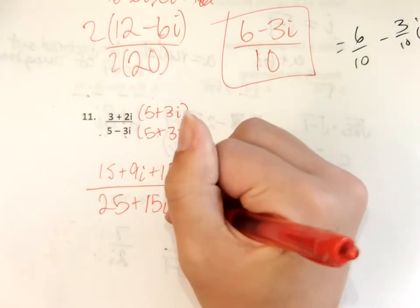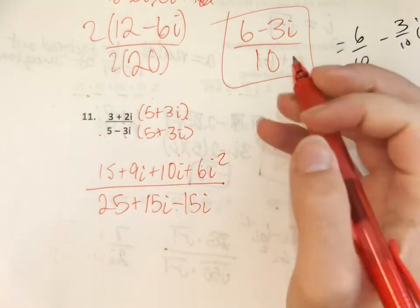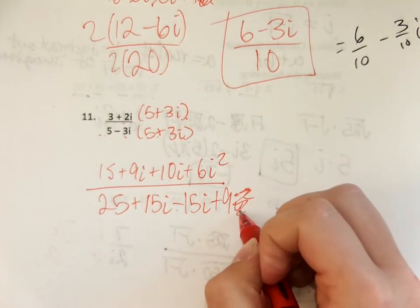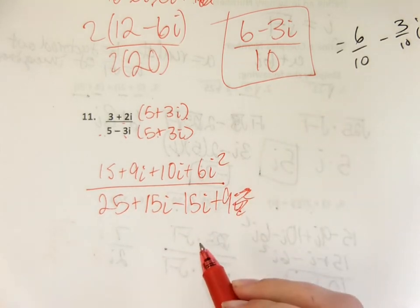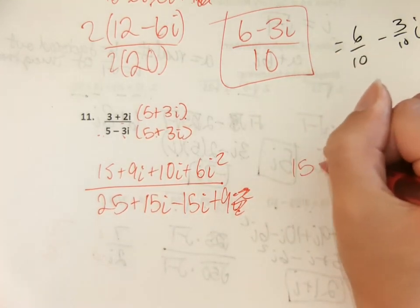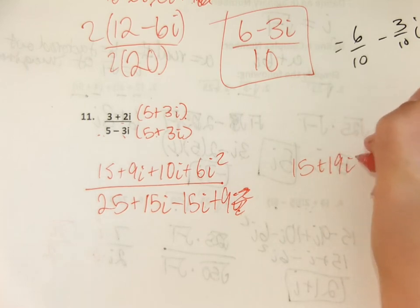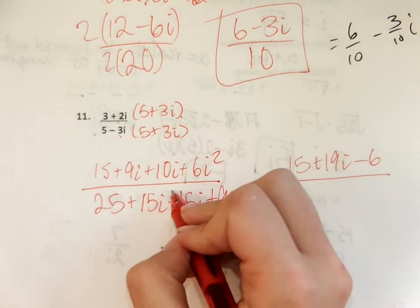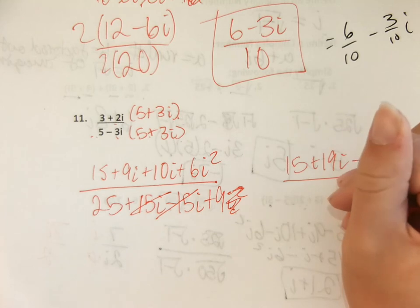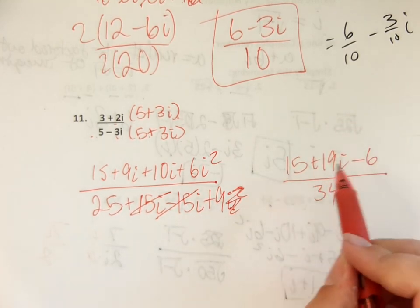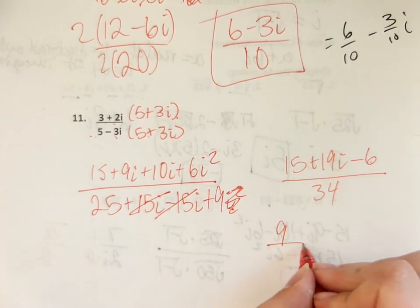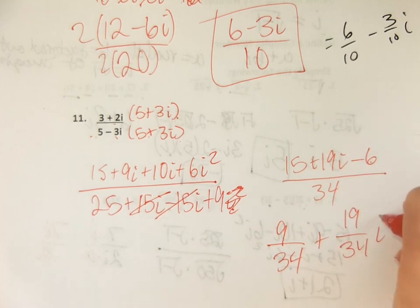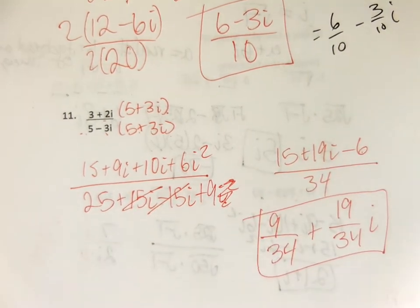For the denominator: five times five is twenty-five, five times positive three i is fifteen i, negative three i times five is negative fifteen i — those cancel — and negative three i times negative three i is negative nine i squared, which becomes positive nine since i squared equals negative one. Simplifying the numerator: fifteen plus nine i plus ten i minus six — since i squared is negative one, negative six i squared is positive six — wait, fifteen minus six is nine, plus nineteen i. The denominator is twenty-five plus nine is thirty-four. So the final answer is nine over thirty-four plus nineteen over thirty-four i.